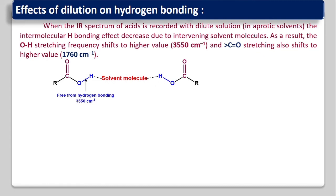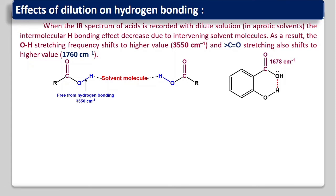Free from hydrogen bonding, the OH absorbs at 3500 to 3550 cm⁻¹. However, this dilution effect does not affect the IR frequency of ortho-hydroxybenzoic acid because intramolecular hydrogen bonding is not affected by dilution — the functional groups are very close to each other, and solvent molecules cannot enter that region to disturb the hydrogen bond. Dilution affects only intermolecular hydrogen bonding.